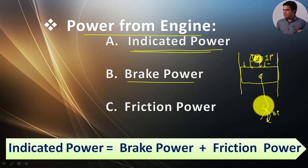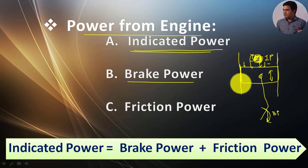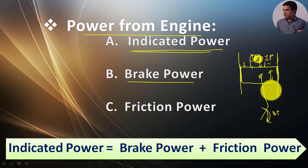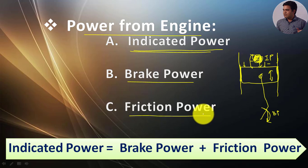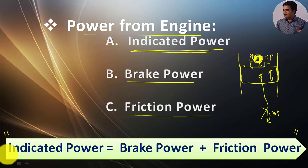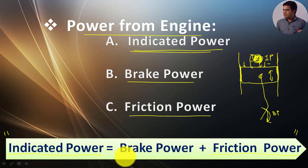As we are aware from the construction, the piston slides up and down inside the cylinder, so it has to face some frictional resistance between the piston wall and the cylinder wall. The power which is utilized to overcome this friction is known as friction power. The relation between these three powers — indicated power, brake power, and friction power — is given by this equation: indicated power equals brake power plus friction power.